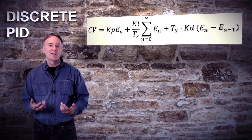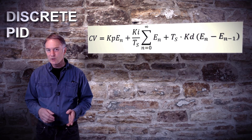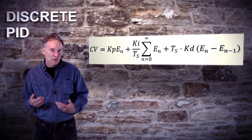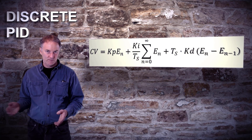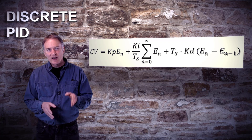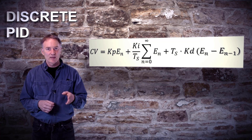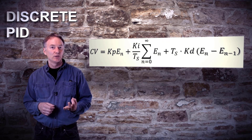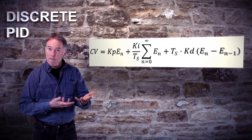The equation then becomes: instead of using integrals, we use sigma to show that we are summing mathematical or computational terms over time. In the case of the proportional term, whatever the instantaneous difference is between the set point and the PV gives us our error value, and we simply scale that by the proportional gain to get a number.